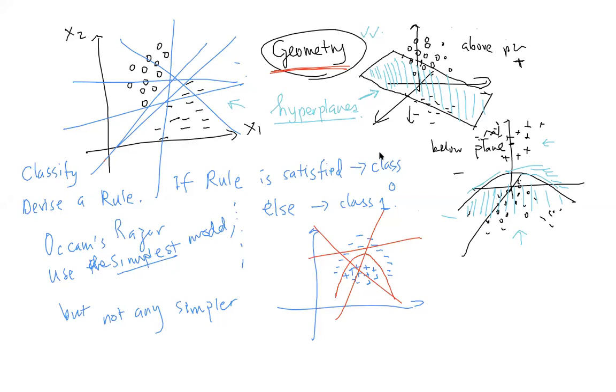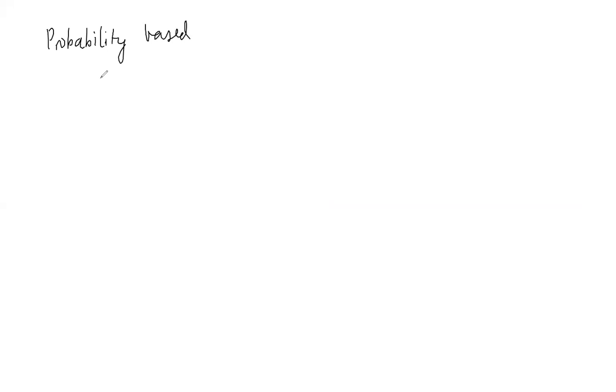After the break, we looked at geometry-based methods, which form an important class of classifier methods. There is another class based on probability — probability-based methods. The idea is simple: if you can assign a probability measure to a particular data vector belonging to some class, you can use that for classification.